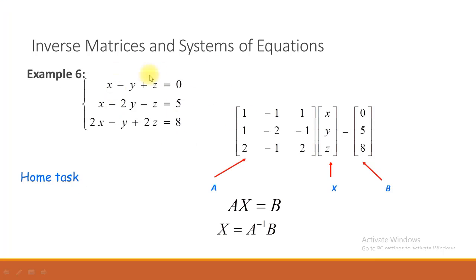Example 6: We have a system of three equations. Writing in matrix form, the coefficient matrix is [1, -1, 1; 1, -2, -1; 2, -1, 2], the variable matrix has three unknowns x, y, and z, and the constant matrix has entries 0, 5, and 8. First find the determinant; if it does not equal 0, find the inverse and multiply by the constant matrix to get the solution. This is a home task for you.